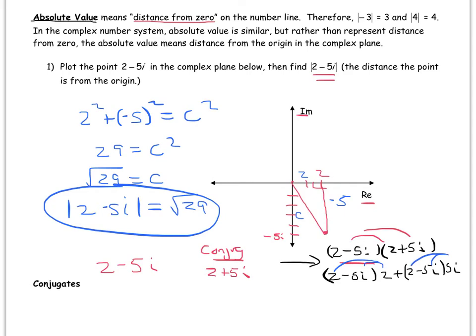What I get is 4 minus 10i, plus 10i. Negative 5i times negative 5i: negative 5 times negative 5 is 25, and i times i is i squared which is negative 1, so I get a plus 25. And negative 10i plus 10i cancel.